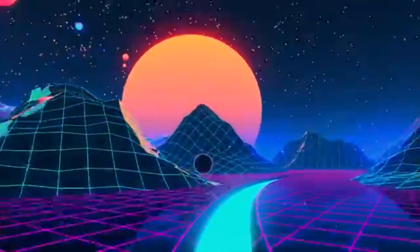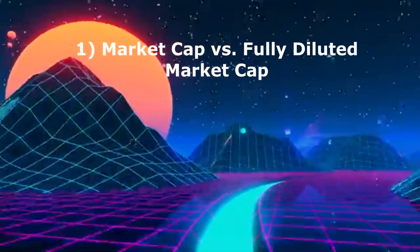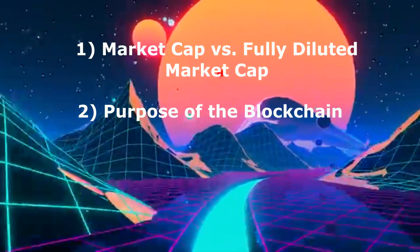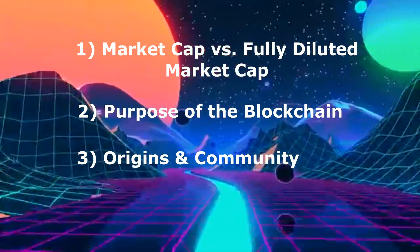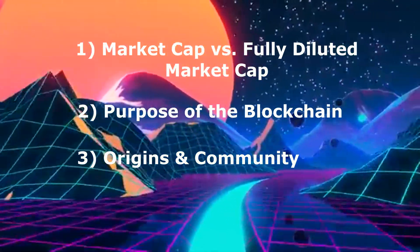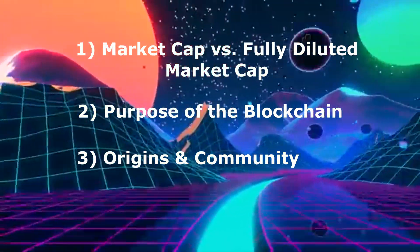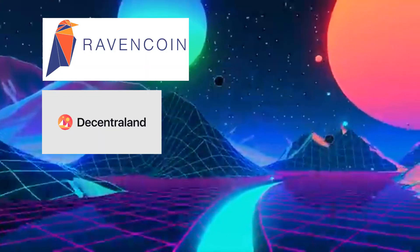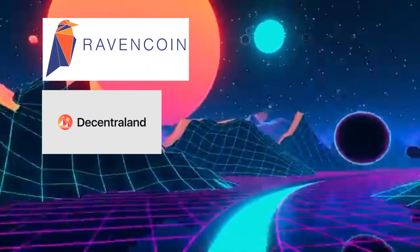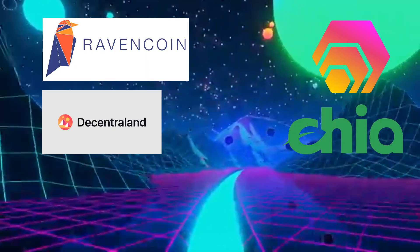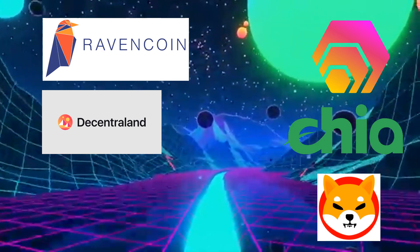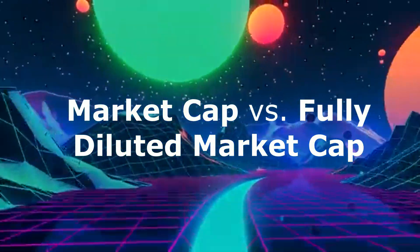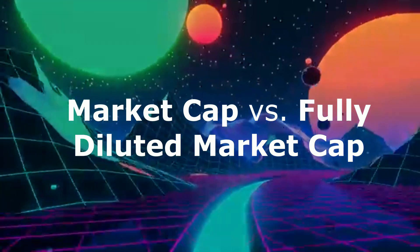Specifically, I'm going to discuss three topics: market cap versus fully diluted market cap, purpose of the blockchain, as well as project origins and community. I will discuss these items in context of some altcoins that I do believe in long term, like Ravencoin and MANA, comparing them to other assets that I'm more hesitant about, like HEX, Chia, and Shiba Inu. So let's get started.